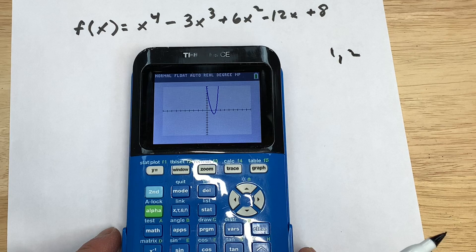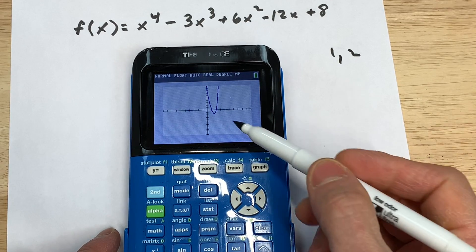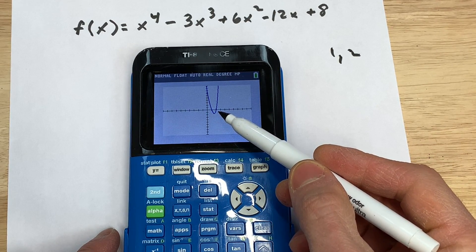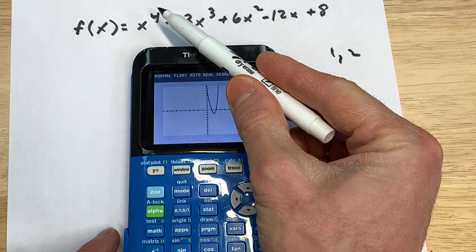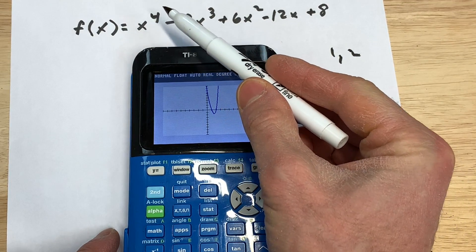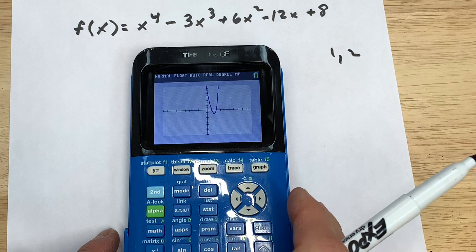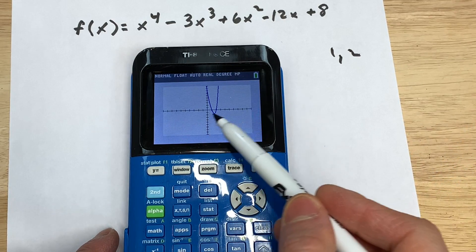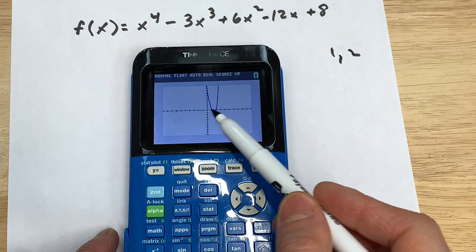1 and 2 are what are called zeros of our polynomial, meaning when x equals 1, y equals 0. When x equals 2, y equals 0. But you can see this is a fourth degree polynomial, which means that there's going to be four zeros. But you can see that two of them are going to be imaginary because it's not crossing the x-axis four times.